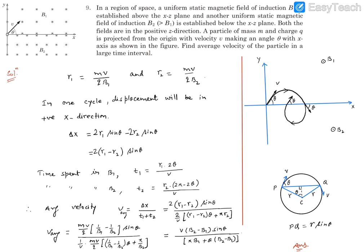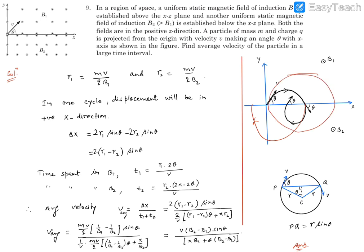While the particle is in B1, it follows a circular arc, and the xz plane is where it transitions to the other field. Because this is a circular path, the angle at which it enters the xz plane equals the angle at which it exits — the entry and exit angles are symmetric. Once it crosses into the B2 region, it follows a smaller circle. Since r2 is smaller, the particle stays within the magnetic field regions at all times.